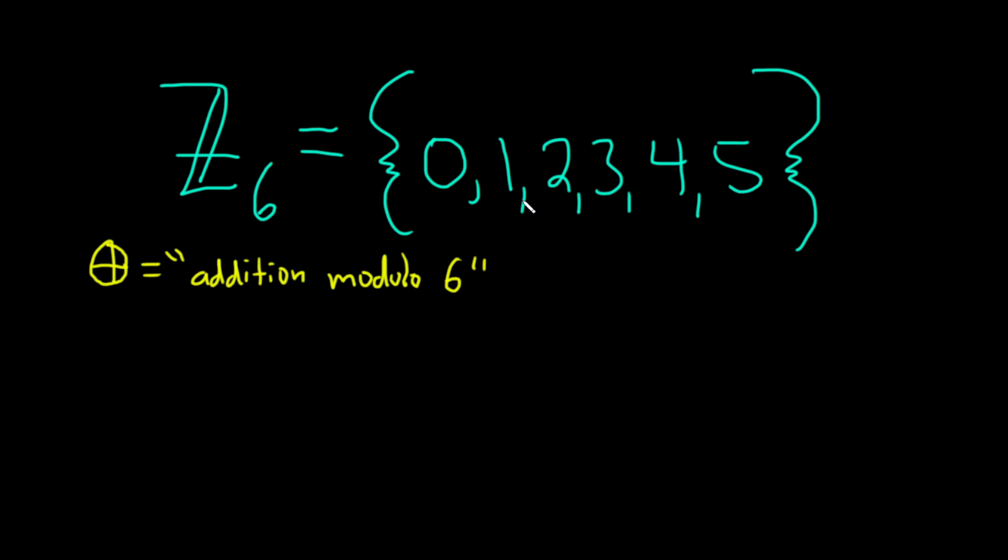So basically what are these numbers, let's talk about that. These are the remainders that you get when you divide a number by 6, this is a list of all the possible remainders. So for example, let's talk about how the addition works here.